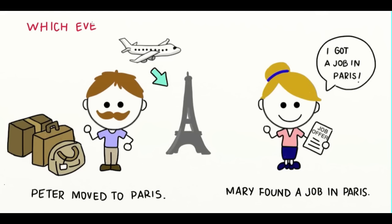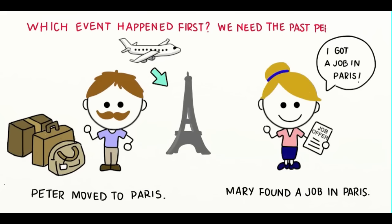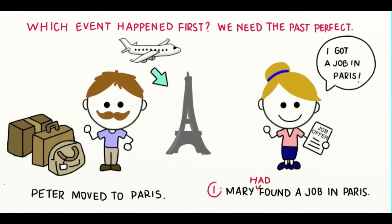We can use the past perfect to tell us which event happened first. For example, if we add the word had to this sentence — 'Peter had moved to Paris' — we know that this action happened first. But if we put had in the other sentence, 'Mary had found a job in Paris,' now this action happened first.